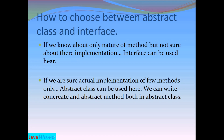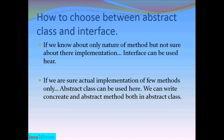One more reason to choose interfaces over abstract classes is that a Java class can extend only one class, whether it is an abstract class or a concrete class, but it can implement any number of interfaces. For example, in threads, we can create a thread in two ways: by extending the Thread class or by implementing the Runnable interface. But if I am extending Thread class, I cannot extend any other class. Whereas if I am implementing Runnable interface, I can implement any other interface and also extend any other class. So as per requirement, we can choose between abstract class and interface.